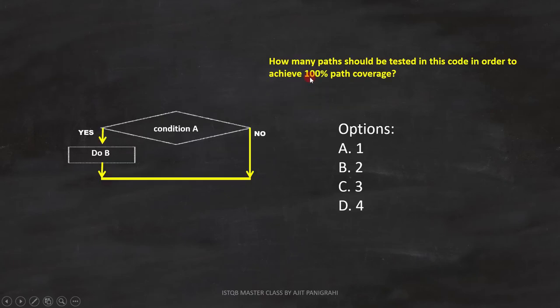Now the question is, how many paths should be tested in this code in order to achieve 100% path coverage? Here we have two paths, so we can use two test cases to cover 100% path coverage. Therefore, answer is B, 2.